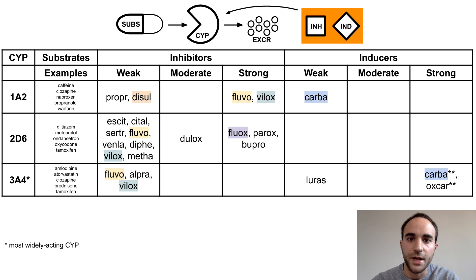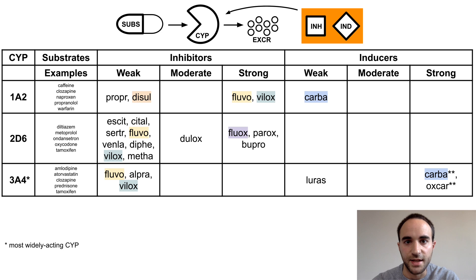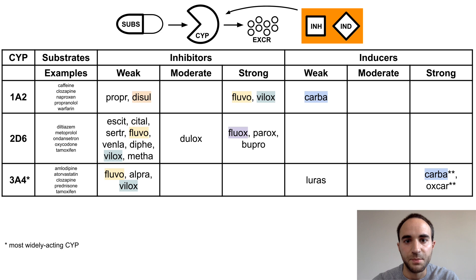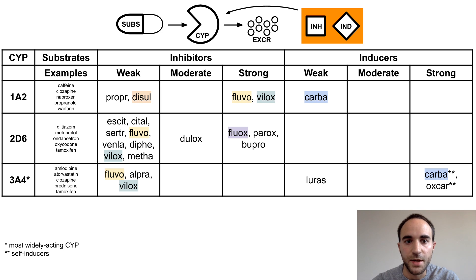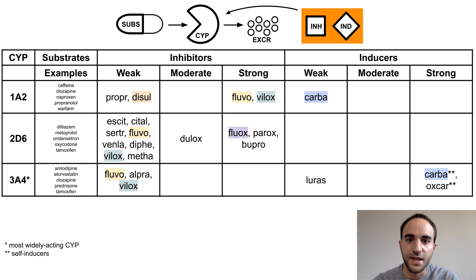Finally is CYP3A4. Weak inhibitors include fluvoxamine, alprazolam, and viloxazine. Lurasidone is a weak inducer, and strong inducers are carbamazepine and oxcarbazepine. Note that carbamazepine and oxcarbazepine are also substrates of CYP3A4, which accounts for the self-inducing effect of these medications.